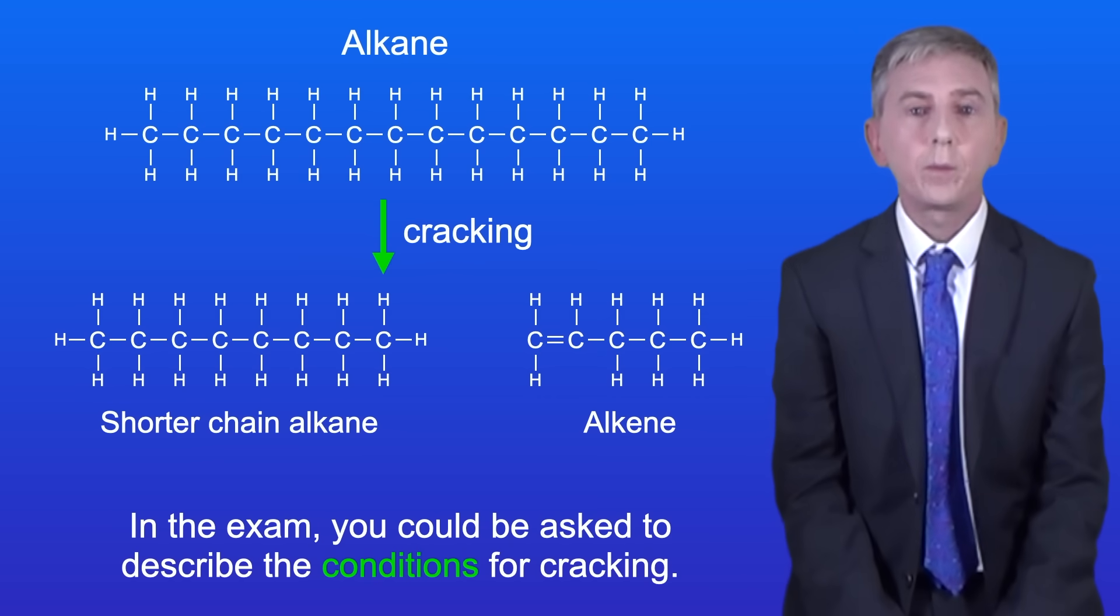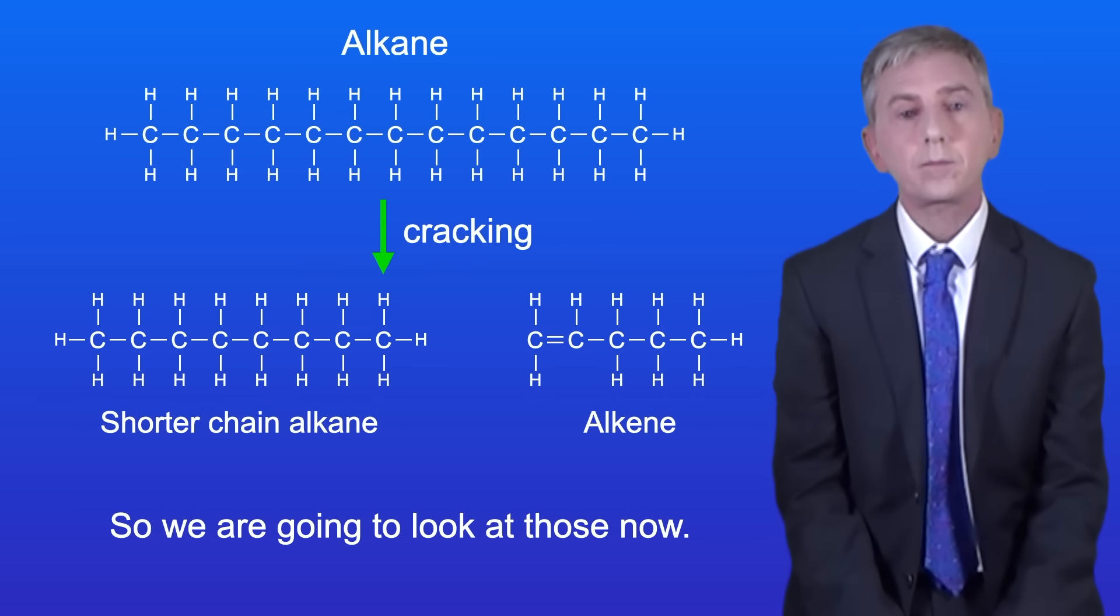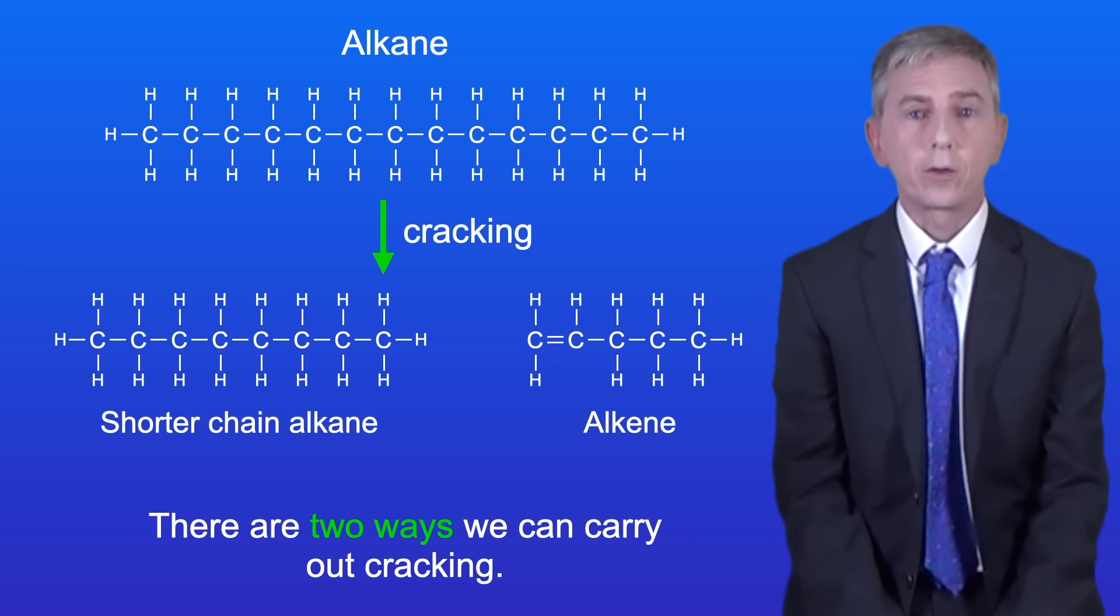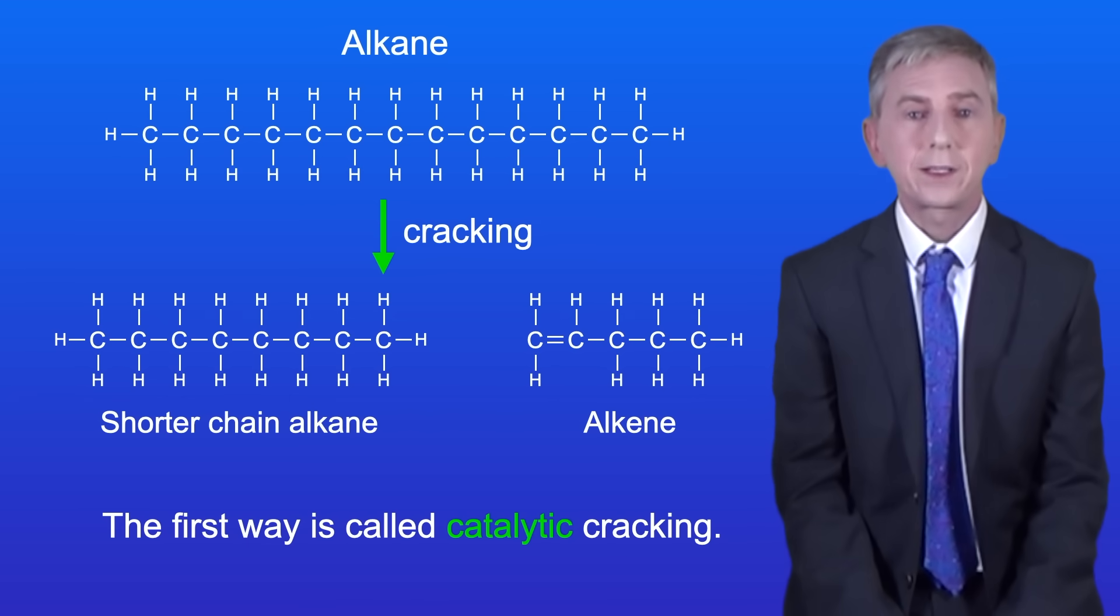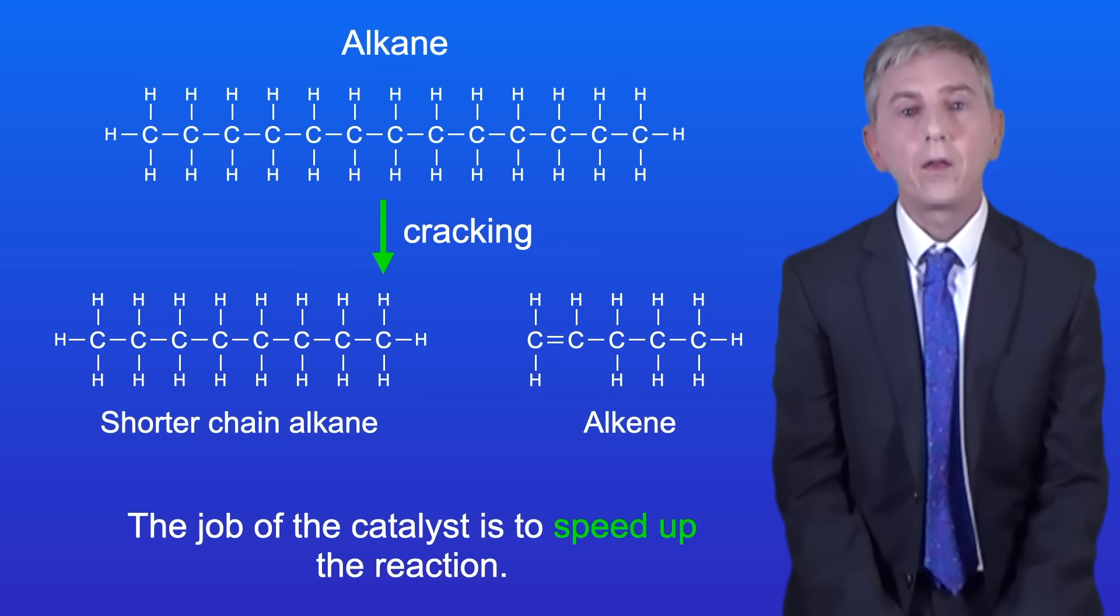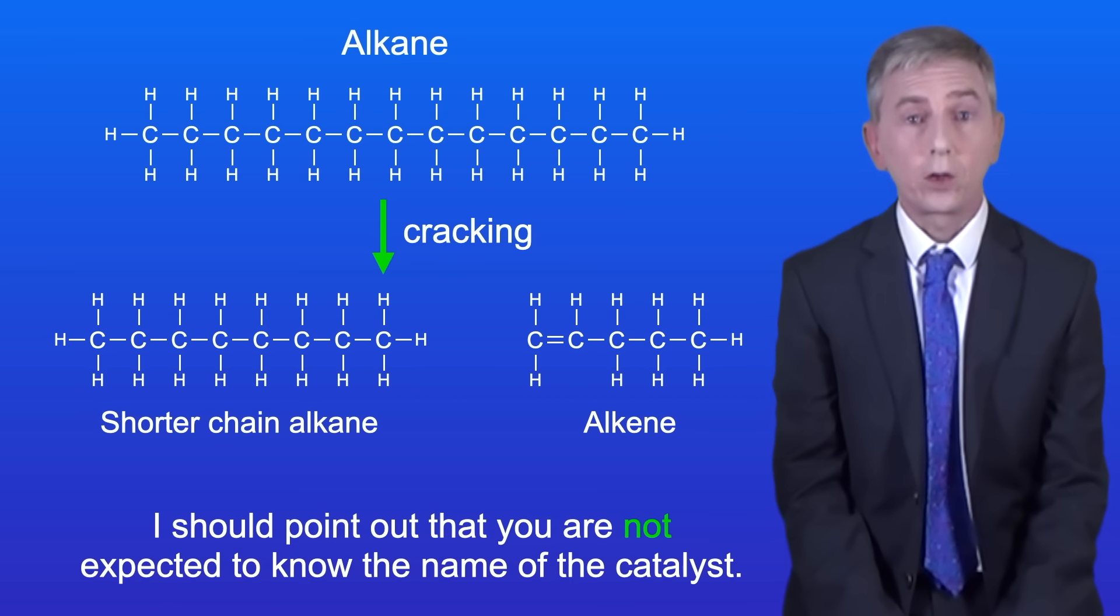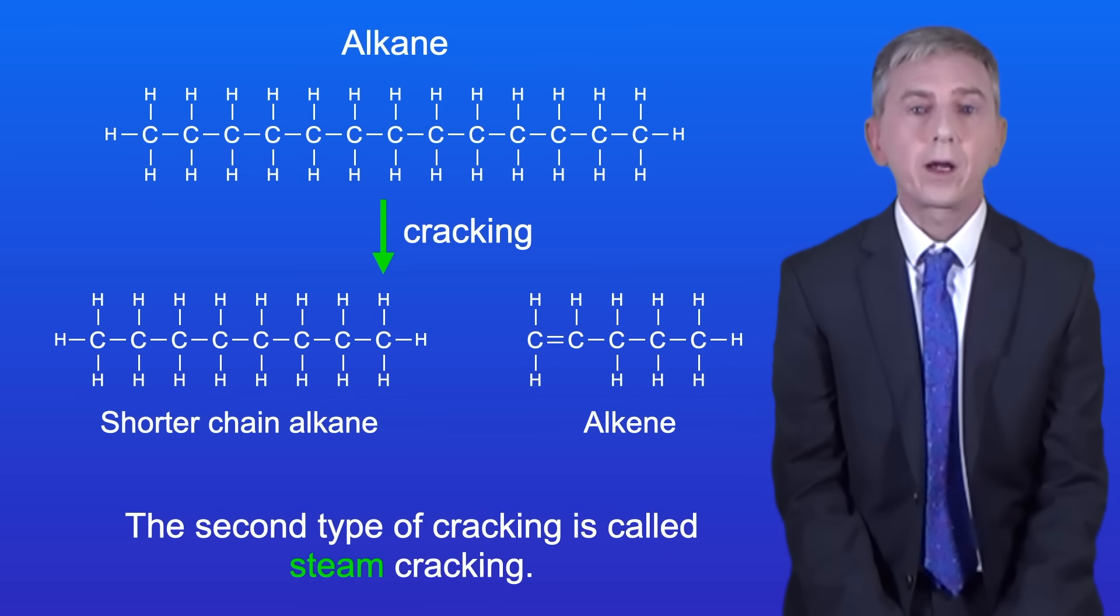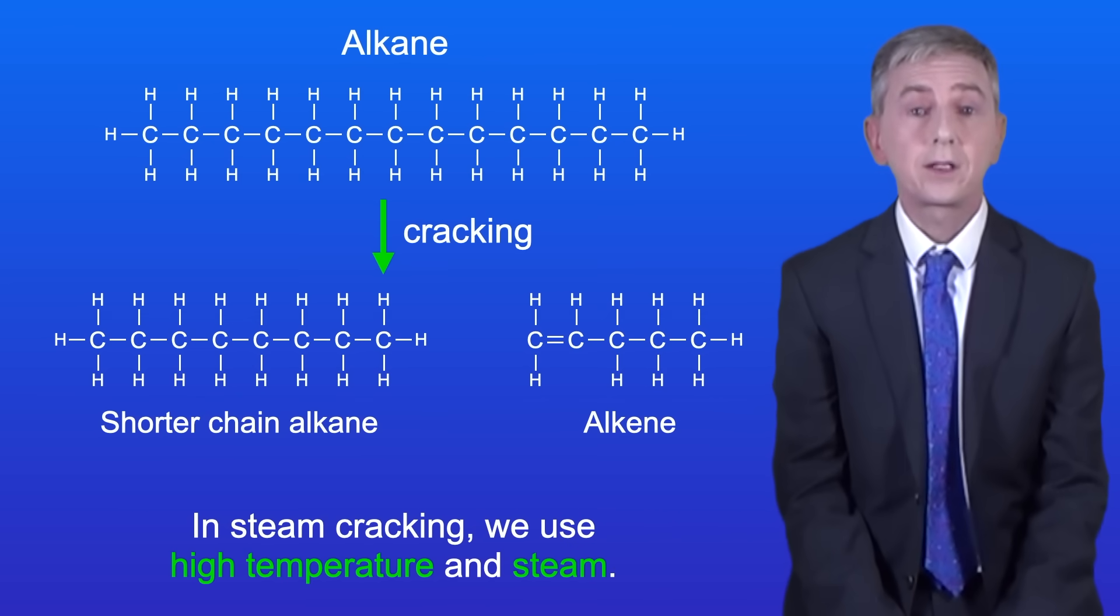Now in the exam you could be asked to describe the conditions for cracking so we're going to look at those now. There are two ways we can carry out cracking. The first way is called catalytic cracking. In catalytic cracking we use high temperature and a catalyst and the job of the catalyst is to speed up the reaction. I should point out that you're not expected to know the name of the catalyst. The second type of cracking is called steam cracking. In steam cracking we use high temperature and steam.